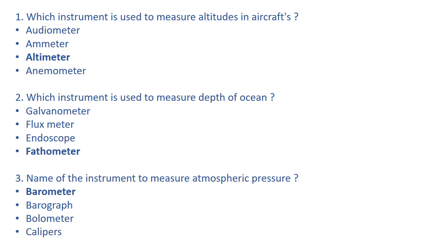Which instrument is used to measure the altitudes in aircraft? Here we have four options: audiometer, emitter, altimeter, anemometer. The right answer is altimeter. It is an instrument which is used to measure the altitudes in aircraft. Let's also discuss the remaining options as they may be helpful.